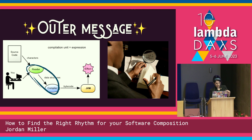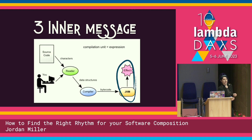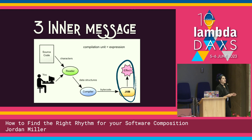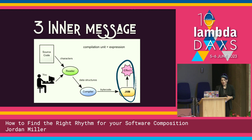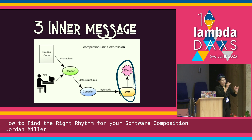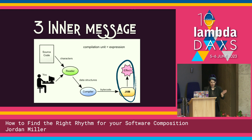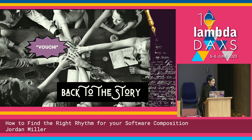Then we have the inner message — the actual content that the information seeker is after. If the information seeker is a computer, the inner message of a Clojure program is the compiled Java or JavaScript code. There can be many levels of the inner and outer message, but we're keeping it simple. Wait — what does this have to do with documentation? Back to the story.